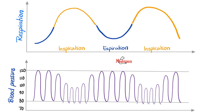Quiz from the previous video: every time I breathe in, systolic blood pressure drops — which is normal. But look here: it went from 120 systolic to about 100 or less, dropping by more than 10 mmHg — here it dropped by 20 mmHg. This decrease in systolic blood pressure by more than 10 during inspiration is called pulsus paradoxus. Remember: pulsus paradoxus is neither pulsus nor a paradox — it's a blood pressure measurement and an exaggeration of a normal phenomenon.